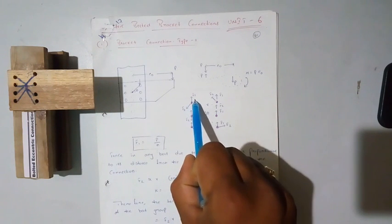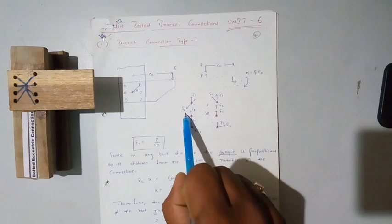F1 stands for a direct shear force. F2 is the force which makes the member rotate, so we can call it a twisting force. A direct shear force can be calculated with the formula: F1 is equal to P by n, where P stands for force and n stands for the number of bolts. By that we can easily calculate the direct shear force acting on each bolt as equal to P by n.